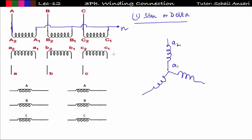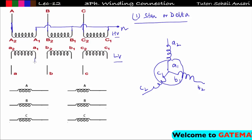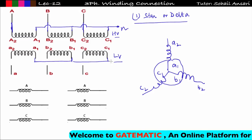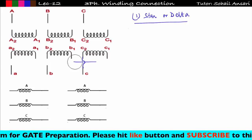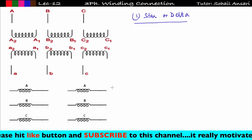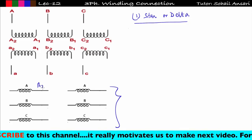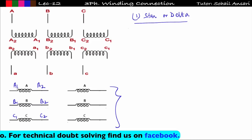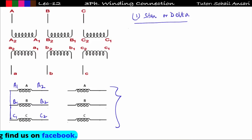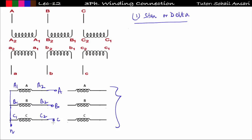For the secondary star connection, using small letters (LV winding): a2, a1; b2, b1; c2, c1. Connect a1, b1, and c1 to the neutral, and take supply from a2, b2, c2. In the linear form, short-circuit a1, b1, c1 and connect to neutral; supply terminals are a2, b2, c2 — representing phases A, B, and C.